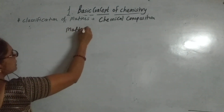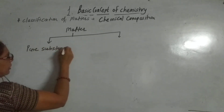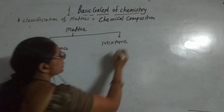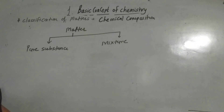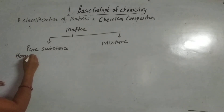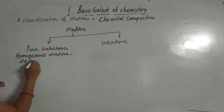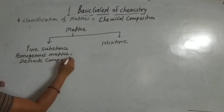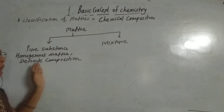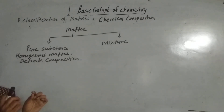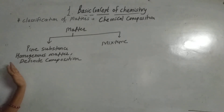Matter is classified as pure substances and mixtures. So what is the difference between pure substances and mixtures? Pure substances are homogeneous matter — the first thing is that they are homogeneous matter. The second is that they have definite composition. The pure substances contain matter that is made up of two or more elements combined in a definite composition — they have a definite ratio of mass in which they are made up.